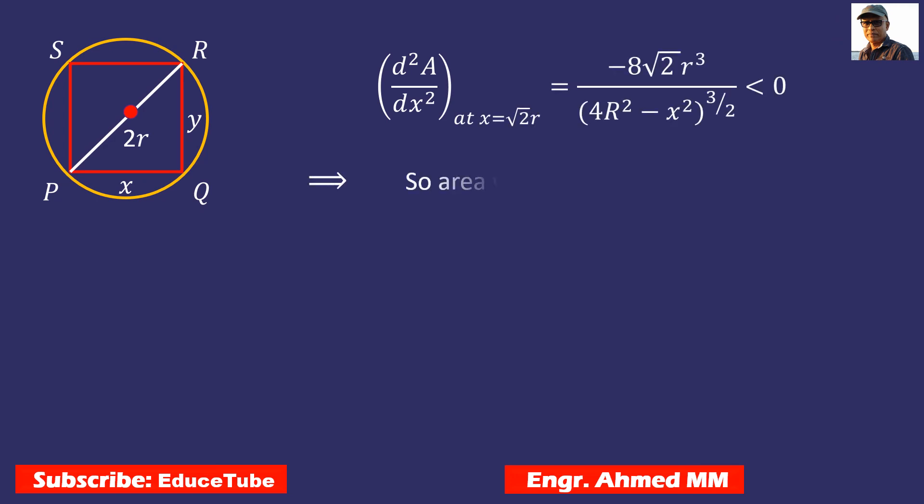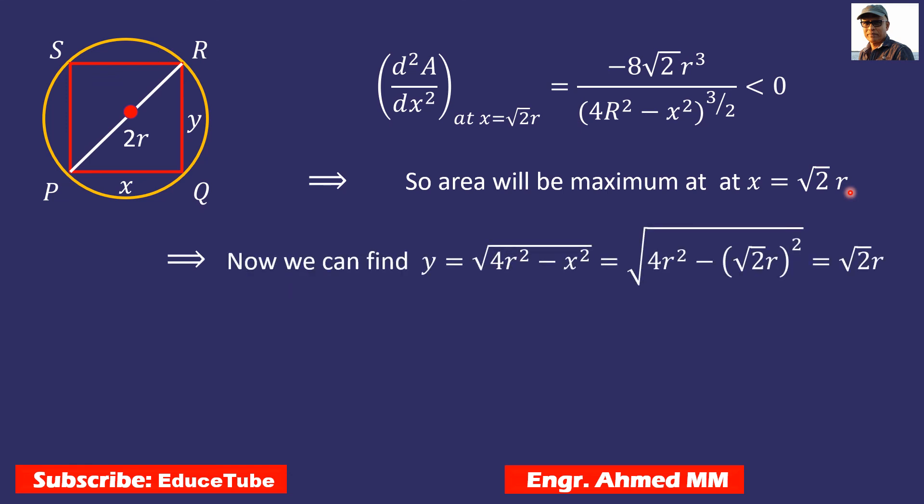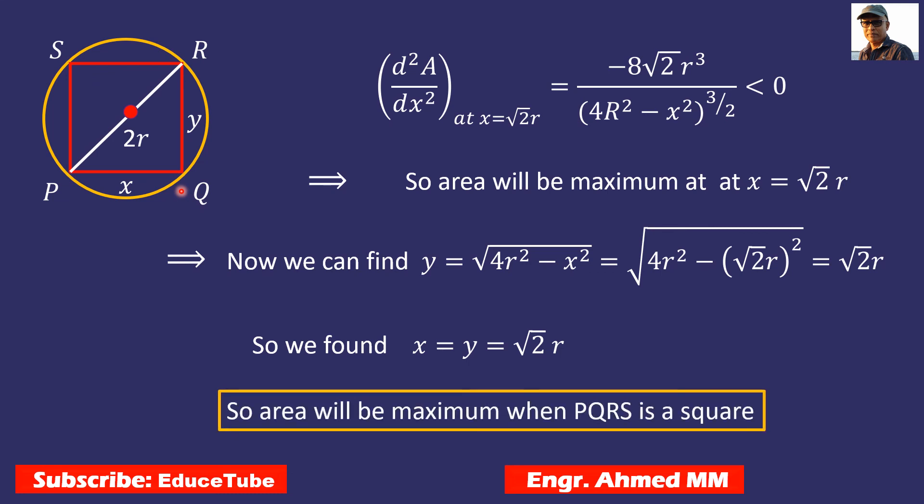So negative means area will be maximum at x = √2r. We are now 100% sure because we got negative value for second derivative. So surely we can write confidently that y = √(4r² - x²) = √(4r² - 2r²) = √2r. So x value and y value are the same.